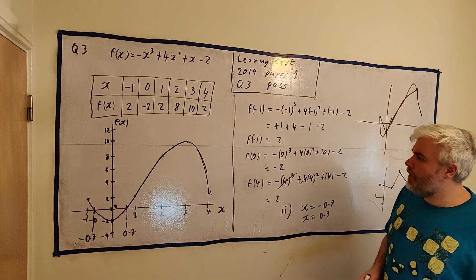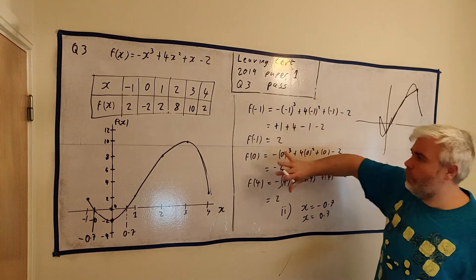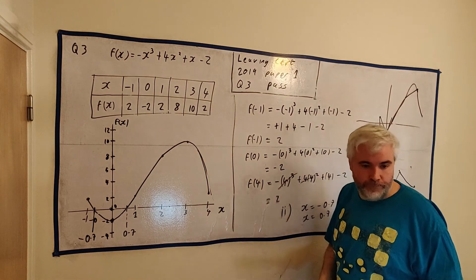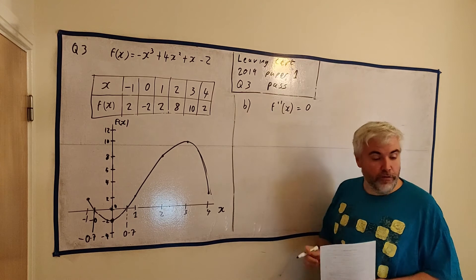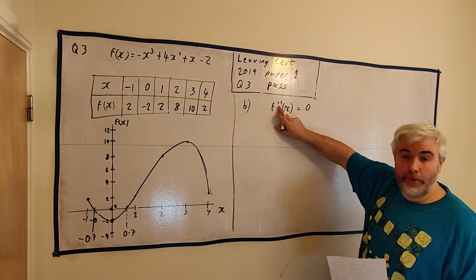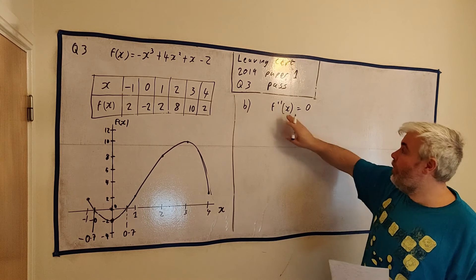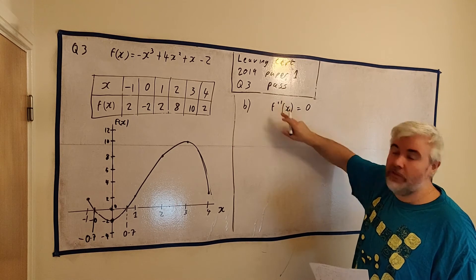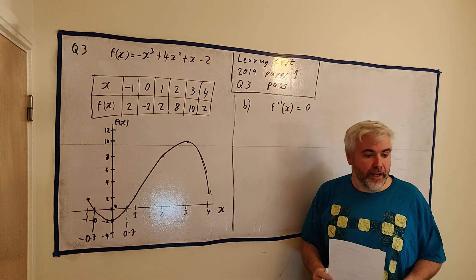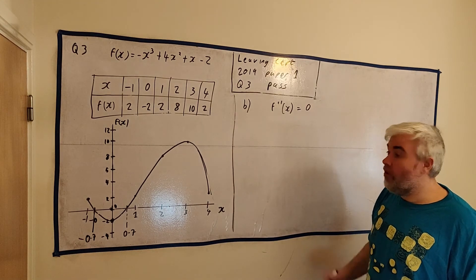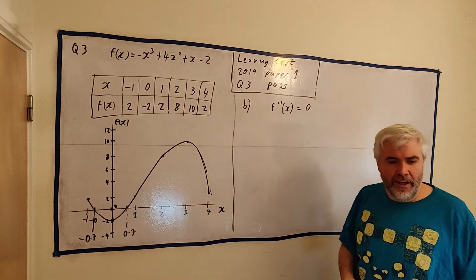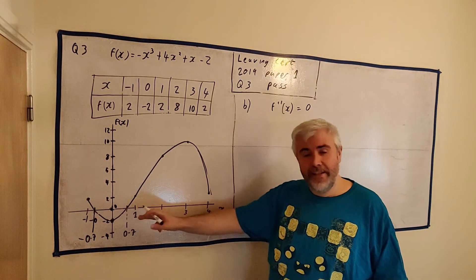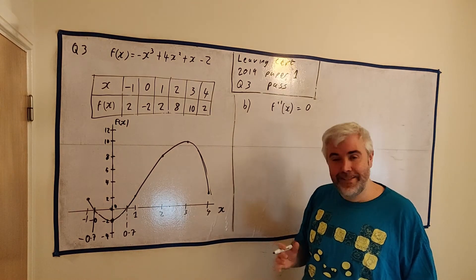Okay, so that's part A. Part B asks us to find the value of x for which f double-prime of x is equal to 0. What this means is the second derivative. The first derivative is one prime, the second derivative is two primes. So we need to find the value of x for which the second derivative equals 0. Before doing the algebra, I'd like to point out — though it would be more of an honours level question — you could estimate the answer from the drawing.